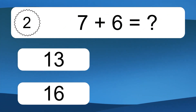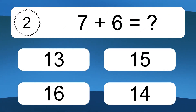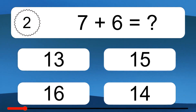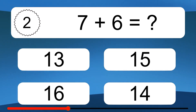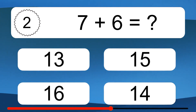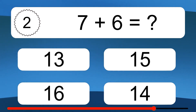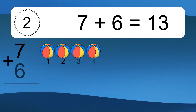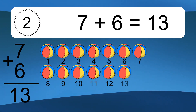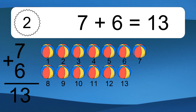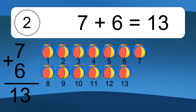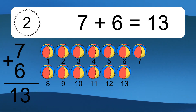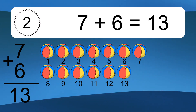7 plus 6 equals what? 7 plus 6 equals 13. Let's count it: 1, 2, 3, 4, 5, 6, 7, 8, 9, 10, 11, 12, 13.